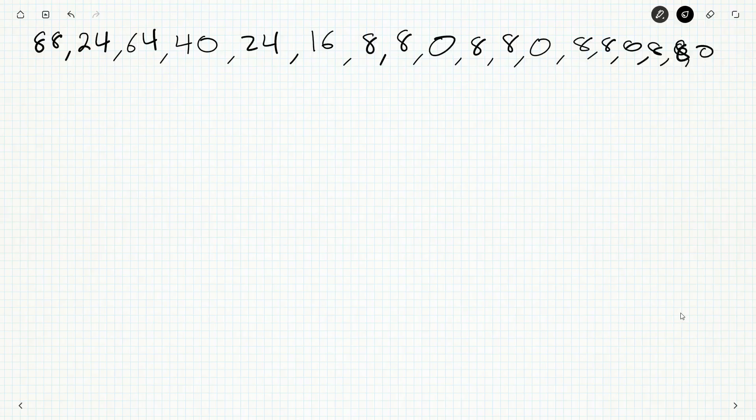All right, so they want the first hundred terms. We've got first term, second term, third, fourth, fifth, sixth, seventh, eighth, ninth, 10th, 11th, 12th, 13th, 14th, 15th, and you'll notice now every three it repeats, it's 8, 8, 0. We're going to keep doing that.